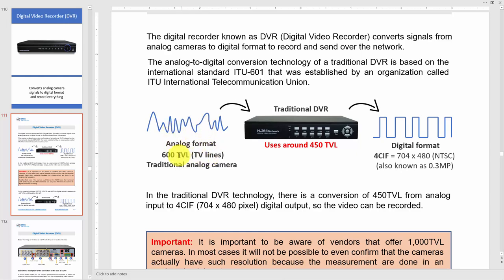When you talk about analog resolution, you talk about TV lines. If you don't understand that, there's another video on this channel where I explain traditional TV lines and traditional analog resolution. You can still find those cameras in stores or on Amazon.